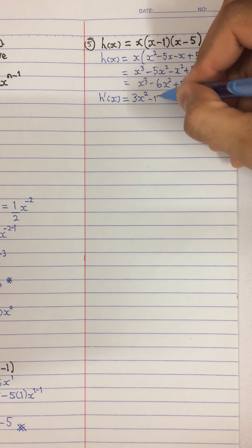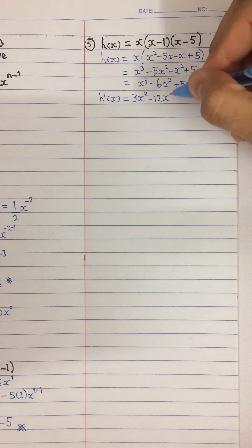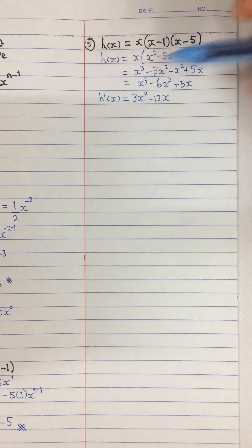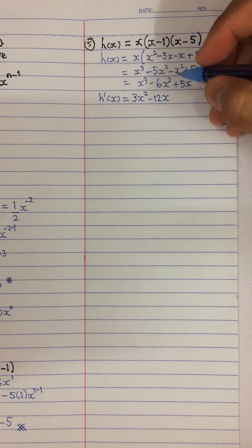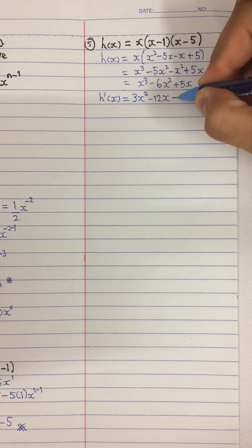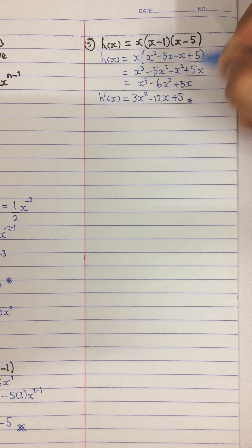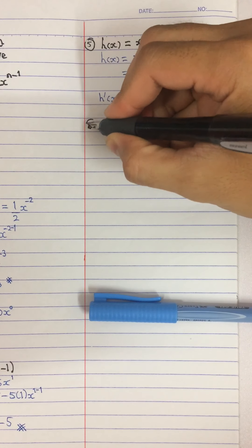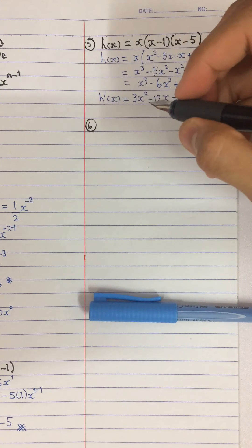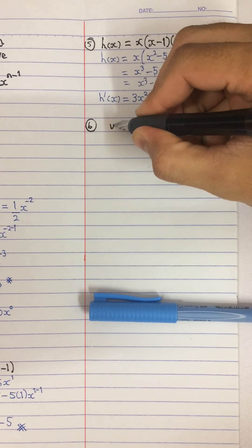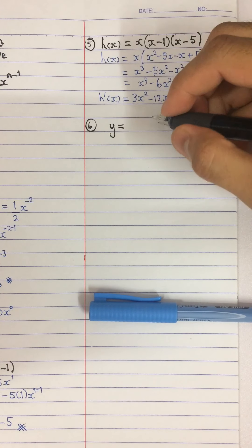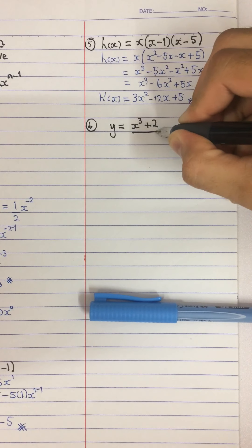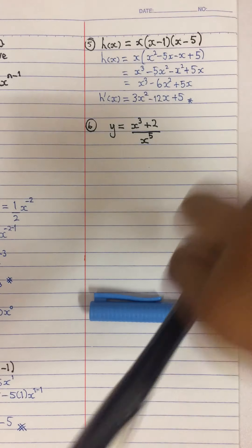If you have y equals to ax to the power of n, the first derivative will be represented by dy by dx. The concept is very easy: you bring the power down, so you write n in front, and then x to the power of n minus 1. There are two basic concepts: bring power down and power minus 1.